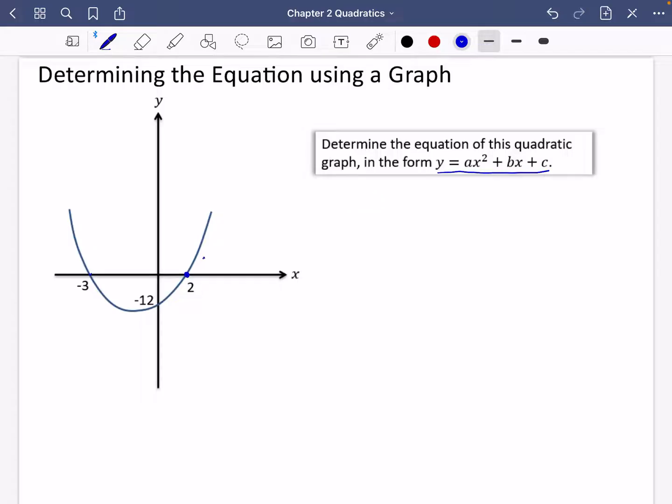The way I'm going to do this is I'm just going to indicate the different bits on the graph that we know the coordinates of. So we know this coordinate here, which is 2, 0. We know this coordinate here, which is 0, minus 12. And we know this coordinate here, which is minus 3, 0.